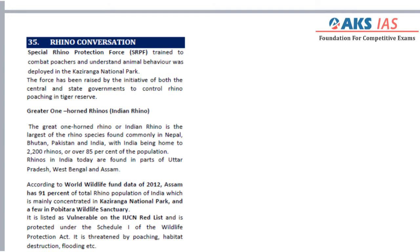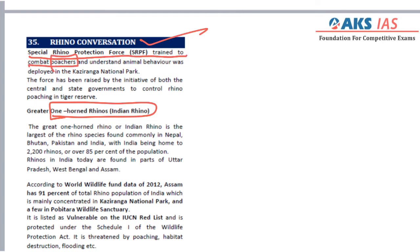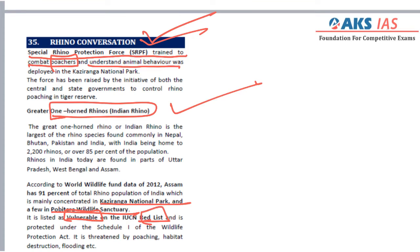Moving from tiger conservation, we discuss rhino conservation — specifically the one-horned Indian rhino. A Special Rhino Protection Force has been trained to combat poachers and to understand animal behavior so that conservation efforts can be reinforced. Rhinos are habituated in Kaziranga National Park and Pobitora National Park in Assam. Their IUCN status is vulnerable in the red list, and it is a Schedule I animal. Tiger is also a Schedule I animal, and its IUCN status is endangered.